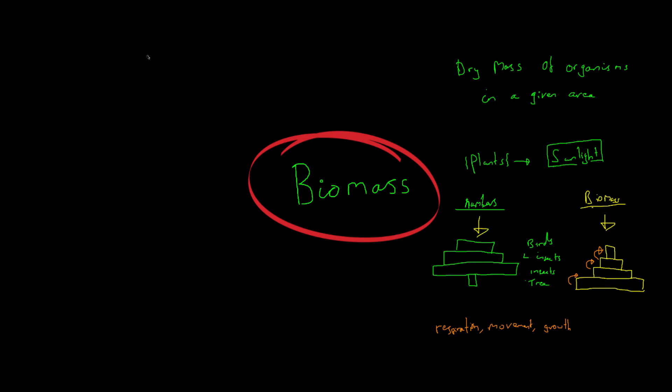Okay, so try and now pause the video and come up with a pyramid of biomass for this food chain. We've got grass being eaten by insects, which are in turn being eaten by frogs, and who are then being eaten by snakes. Okay, so pause the video now and see if you can do it.